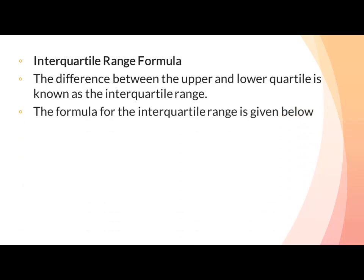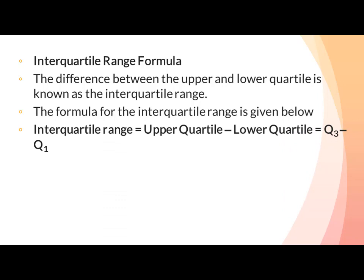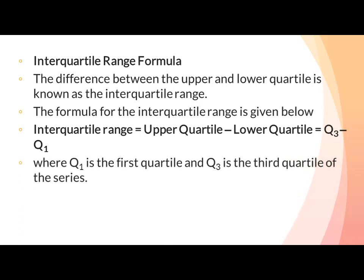Q3 اور Q1 کے بیچ میں جو difference آتا ہے جب ہم Q3 سے Q1 minus کرتے ہیں، وہ interquartile range ہوتا ہے۔ The formula is: interquartile range = upper quartile minus lower quartile, i.e., Q3 minus Q1, where Q1 is the first quartile and Q3 is the third quartile of the series.